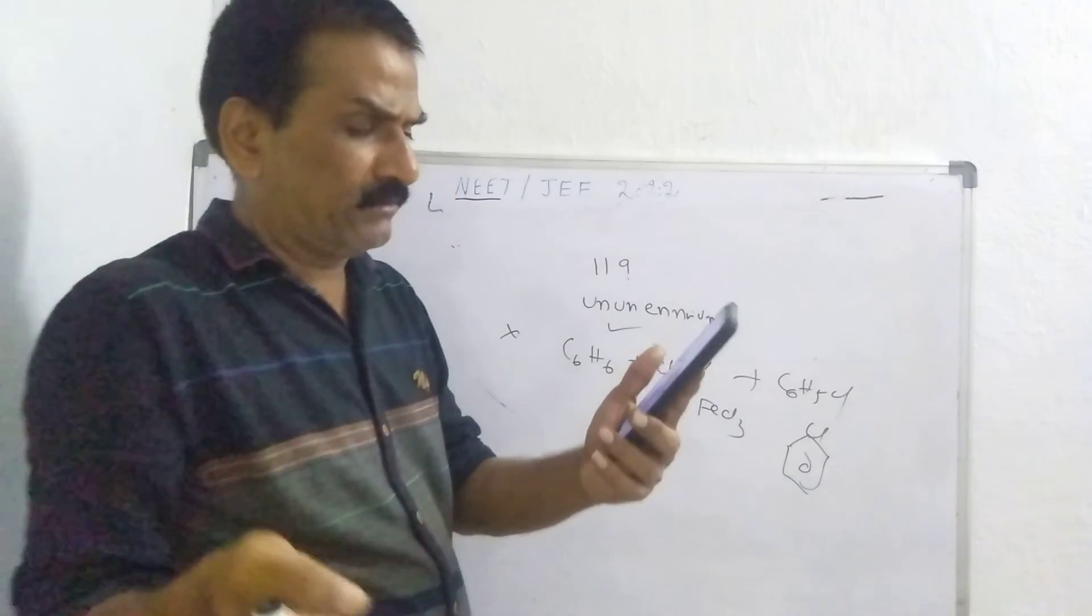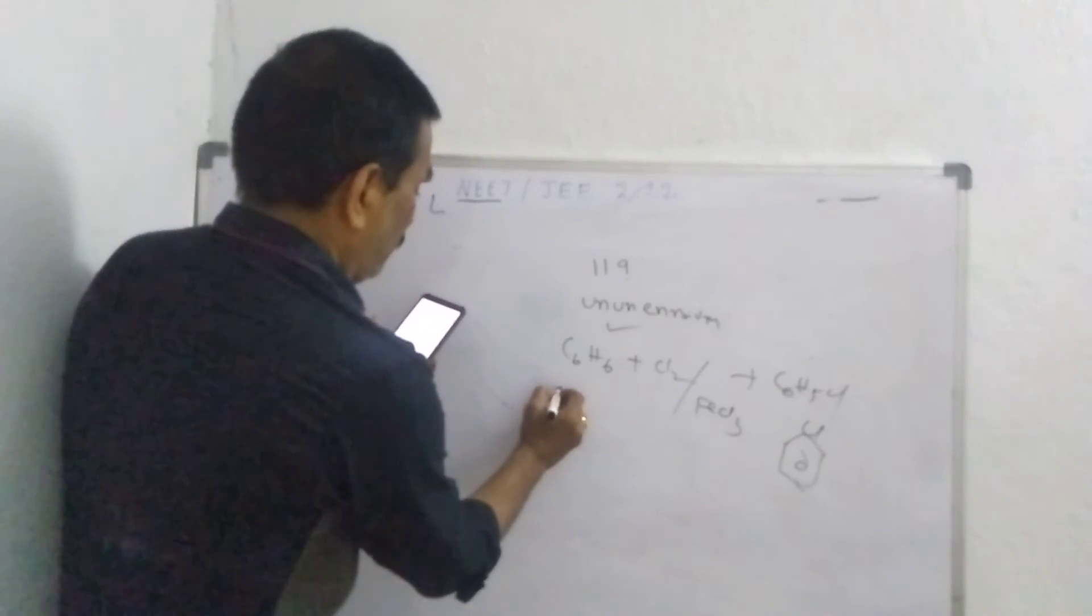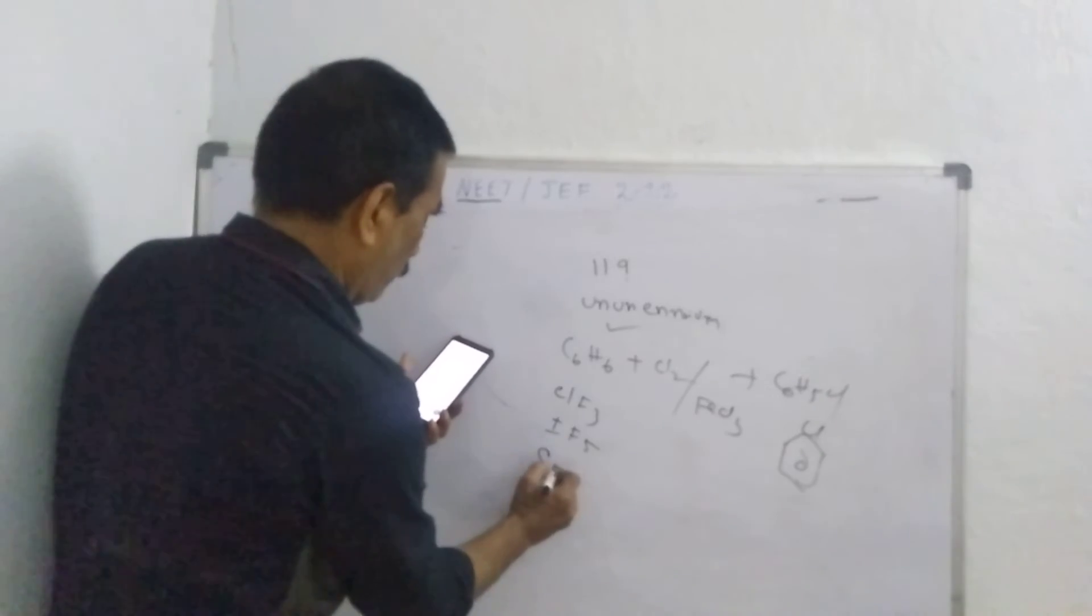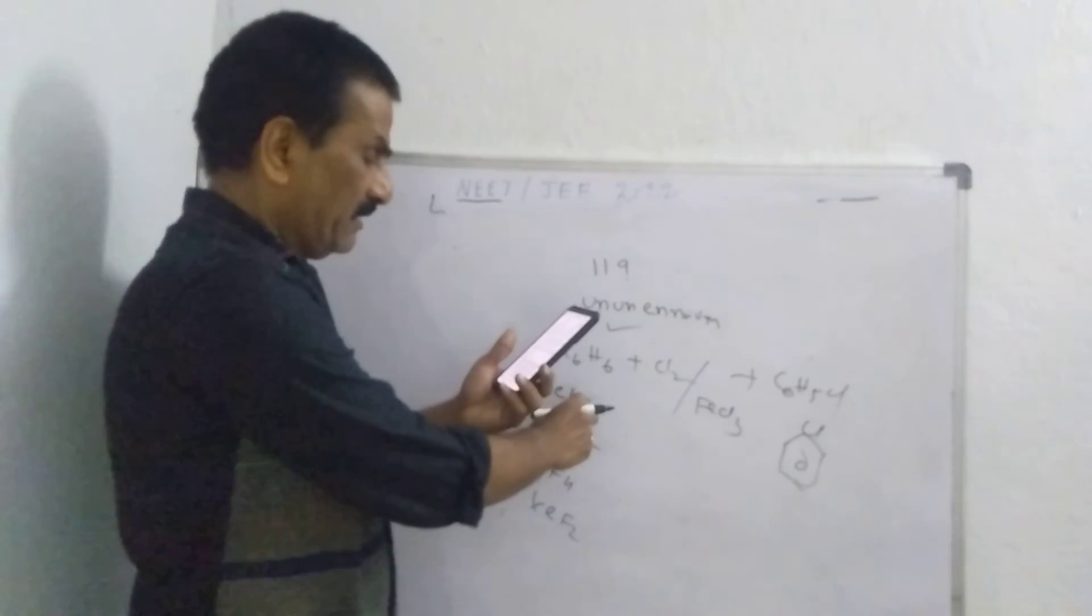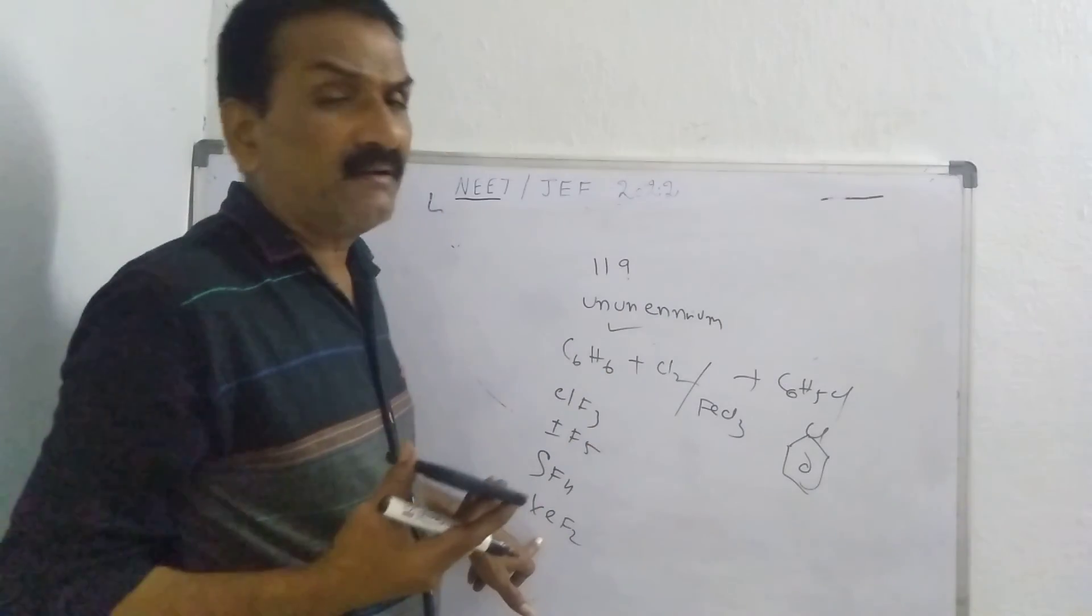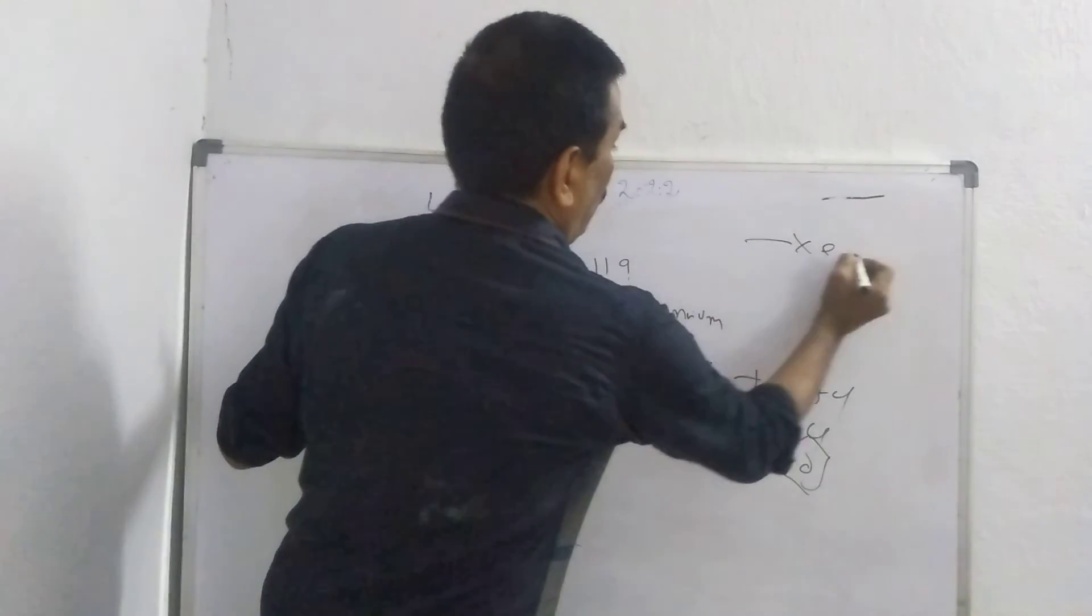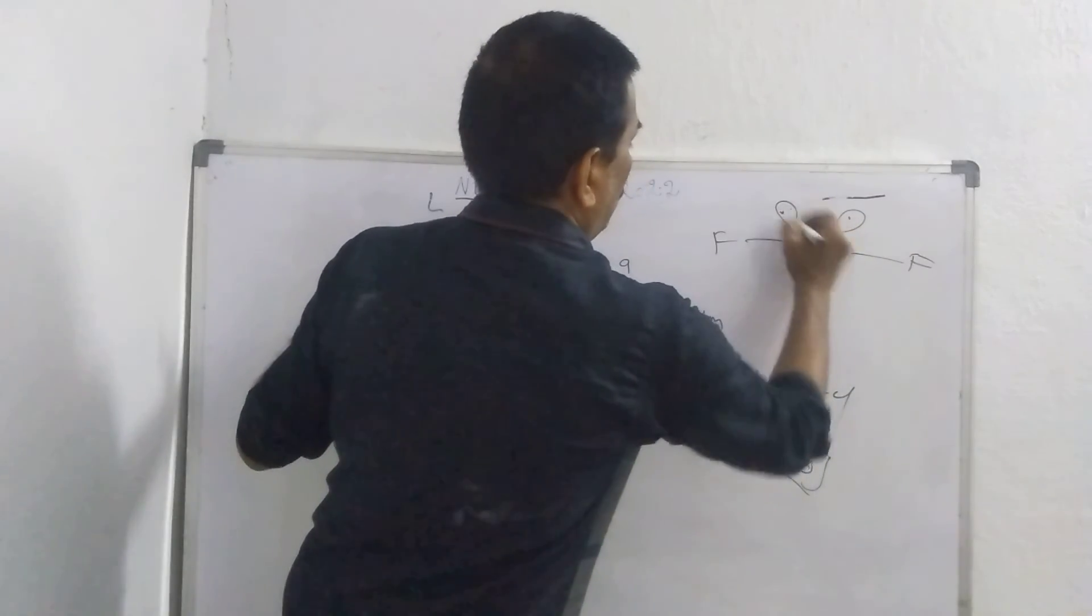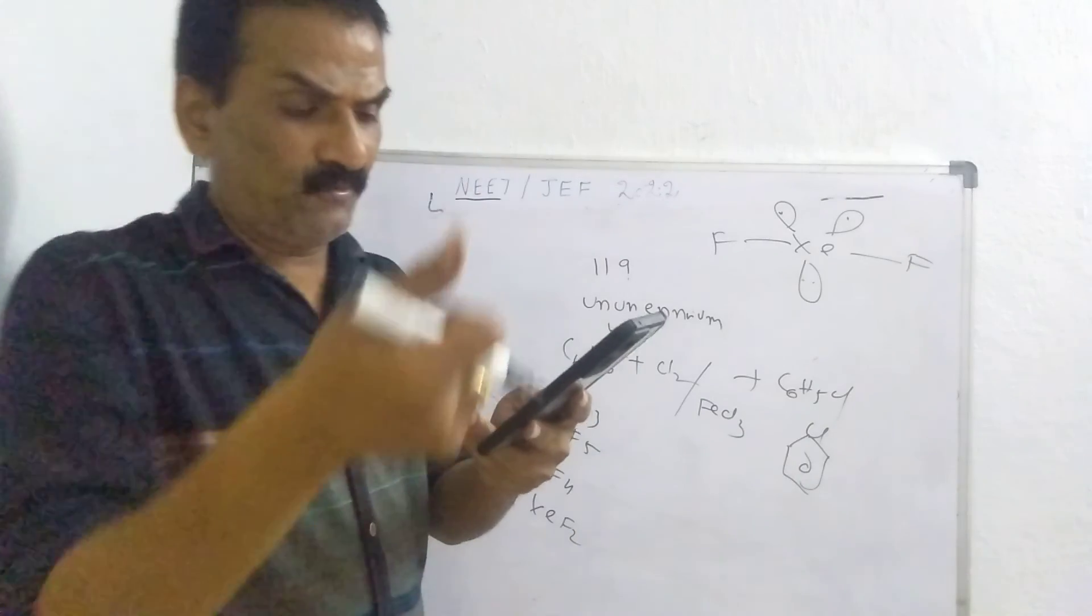At the same time, lone pairs, ClF3, IF5, SF4, XeF2. Lone pairs among the following, which one will have maximum lone pairs, lone pair repulsion. Among four options, Xenon Difluoride, XeF2 contains three lone pairs. Xenon F F. So this is three lone pairs. This possesses maximum repulsion. Thank you. We will discuss tomorrow.